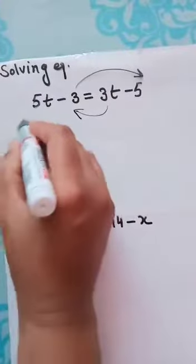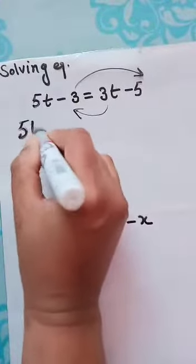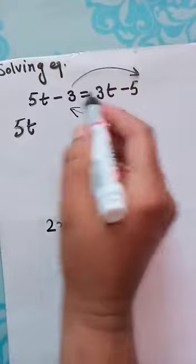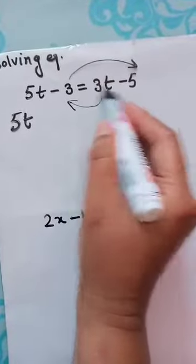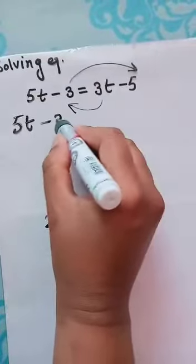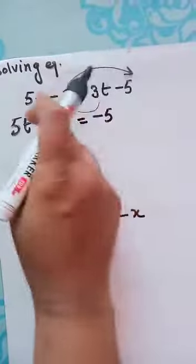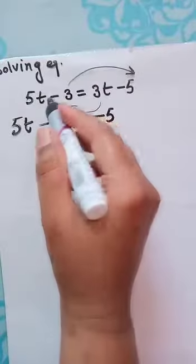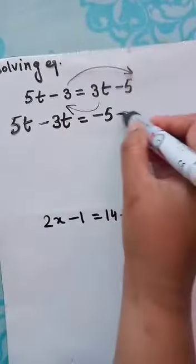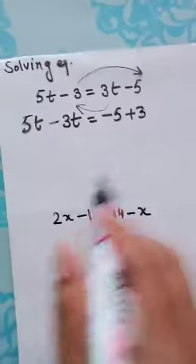So, 5t. Now, 3t is to be shifted here. 3t, how is it? Positive here. So when it is shifted in the left, it becomes negative. 5t minus 3t is equal to minus 5. Now, this minus 3 goes in the right. Minus 3, how will it become there? It will be plus 3.